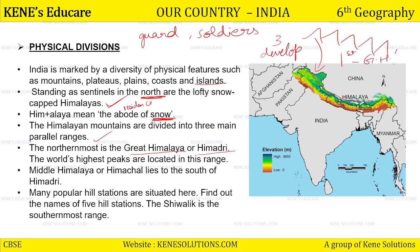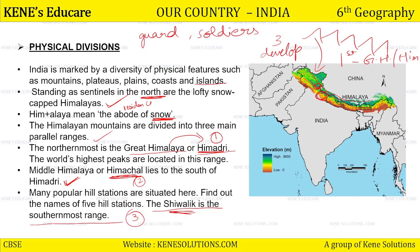The Himalayan mountains are divided into three main parallel ranges. Pehli range ka naam hai Great Himalaya, jise hum Himadri bhi kehte hain. Second range hai Middle Himalaya, jise hum Himachal bhi kehte hain — Himachal Pradesh state bhi isi range ka part hai. Third hamaari range of Himalayas hai Shivaliks — Uttarakhand jo hamaara state hai, woh isi range ka part hai.